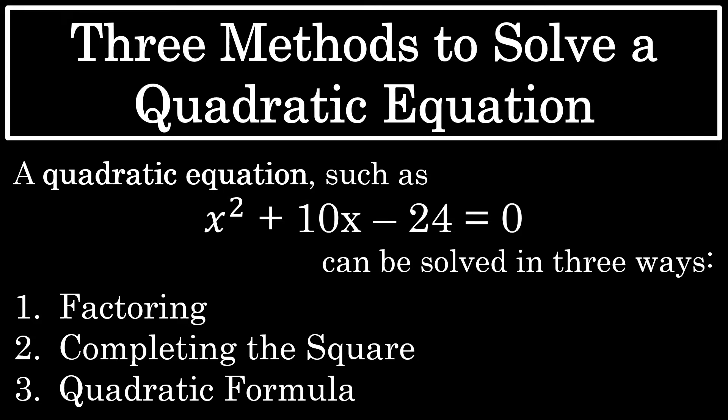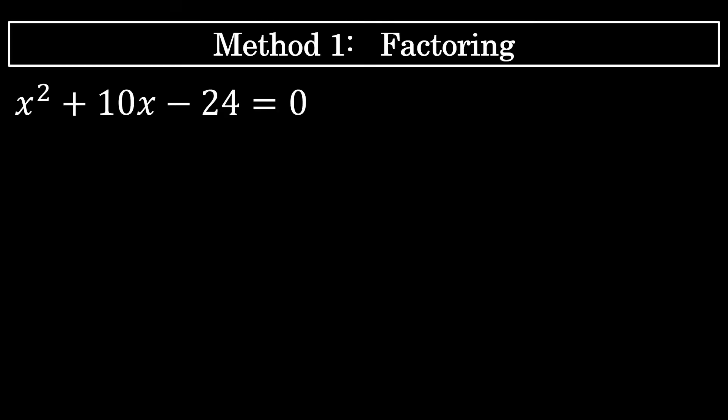In this video, I will solve the equation x squared plus 10x minus 24 equals 0 using all three of these methods, and describe the process for using each method as I do. Let's begin. The first way that I will solve x squared plus 10x minus 24 equals 0 is with the factoring method.